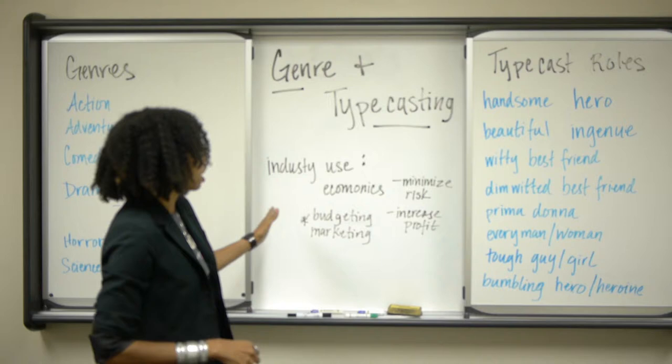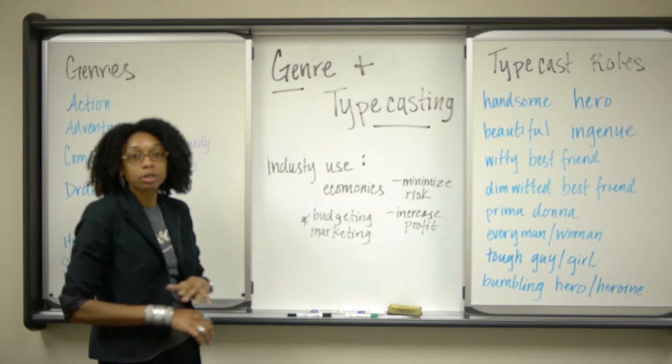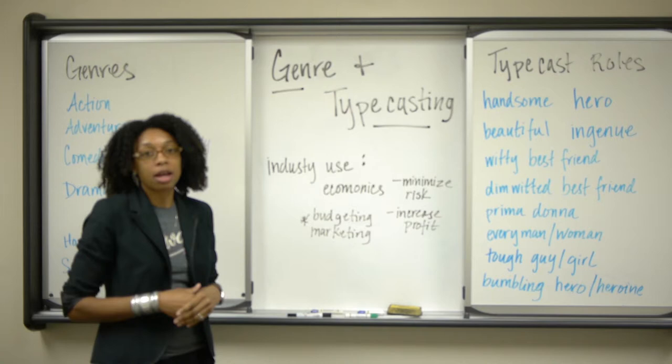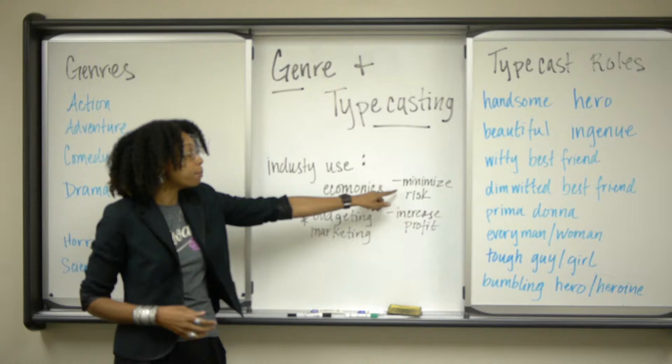The immediate things to know about the use of genre and typecasting for the industry — this is for Hollywood production companies, television production companies, networks, both cable and open access networks like ABC, CBS, NBC, Basic Cable like FX and AMC, and Premium Cable like Showtime and HBO — they're all using genre and typecasting for the same purpose: to minimize their risk, so it's really for economy's sake.